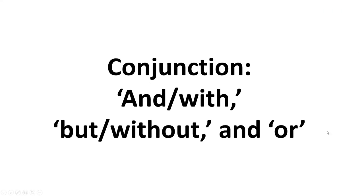Klallam has one multi-purpose conjunction: e. This little word is used in meanings like and and but, and it is also used in many cases where English uses with. Actually, e can be used in a number of ways that don't translate directly into English.